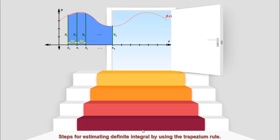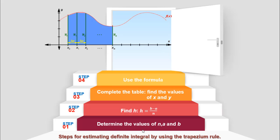Steps for estimating definite integrals by using the trapezium rule: Step 1, determine the values of n, a, and b. Step 2, find h. Step 3, complete the table of values of x and y. Step 4, use the trapezoidal rule.